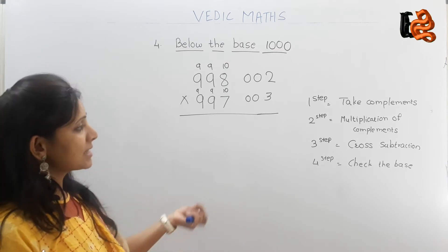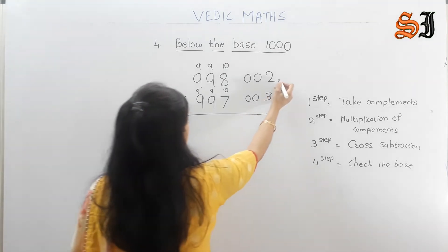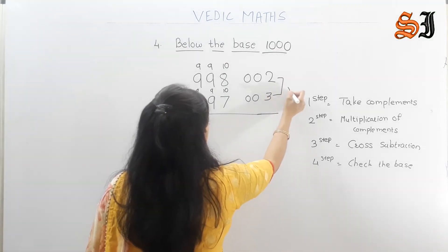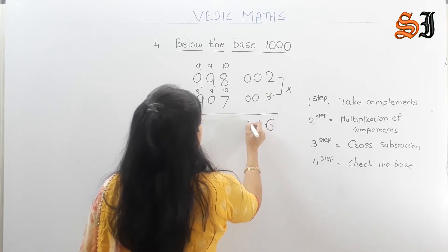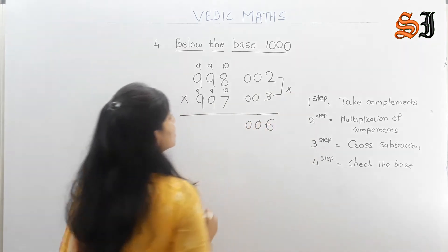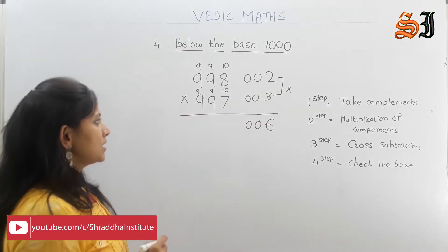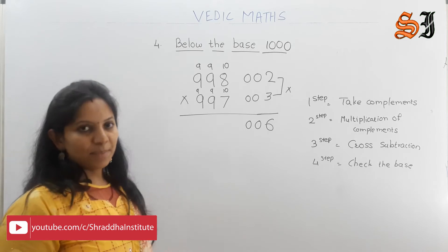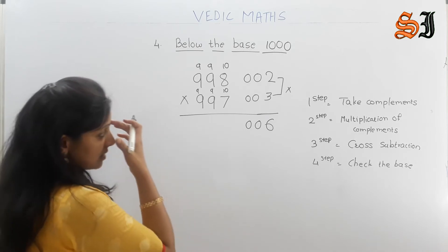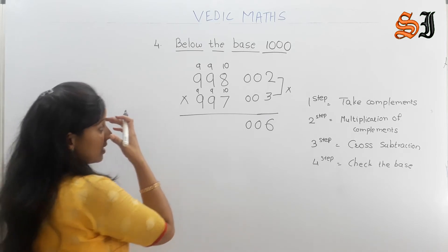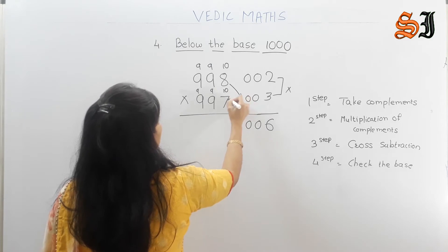Next step: multiplication of complements. Multiply 200 by 300: the result is 006. Same step — 2, 3 gives 006. Complements done. Then, cross subtraction.